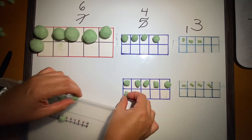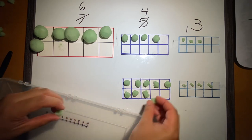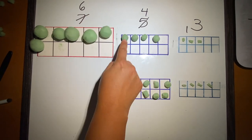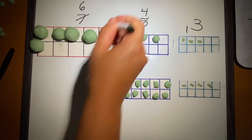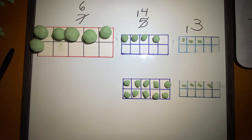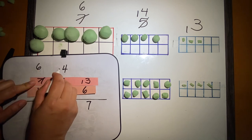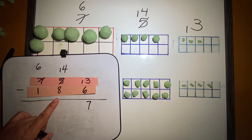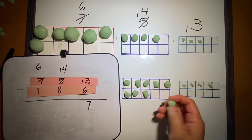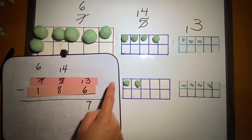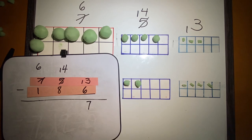This way I can take away the eight I needed. I no longer have four tens — I have ten, eleven, twelve, thirteen, fourteen tens. And I can take away my eight: one, two, three, four, five, six, seven, eight. How many tens do I have left? One, two, three, four, five, six — I have six tens left.